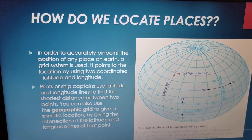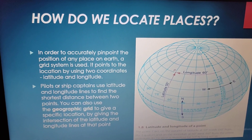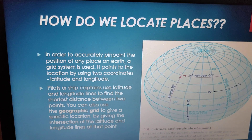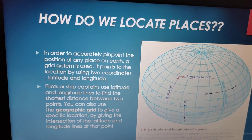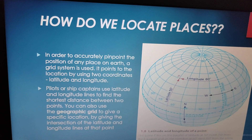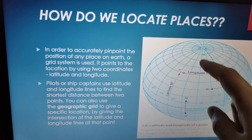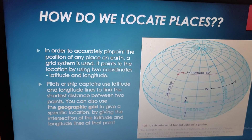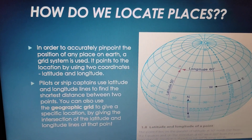This network of systematic lines is called the Earth grid. In order to accurately pinpoint the position of any place on earth, a grid system is used — it points the location by using two coordinates: latitude and longitude. This is similar to your graph paper in mathematics, where there is an x-axis and a y-axis, and you plot x, y coordinates. Similarly, you point coordinates on this network of horizontal and vertical lines.